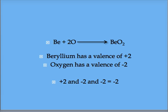Beryllium has a valence of positive two, and oxygen has a valence of negative two. However, the 2O means there are two oxygen molecules in the reaction. Therefore, you have a charge of negative two twice. Positive two and negative two and negative two yields a total of negative two. This reaction would not proceed.